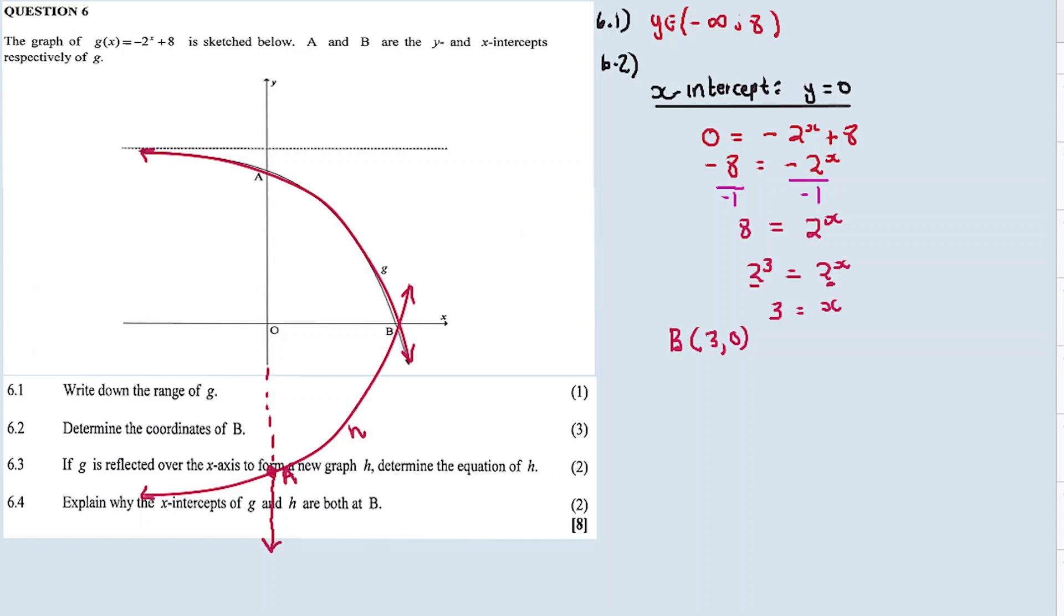The Y values of G, they were once positive, but now reflected over the X-axis, the Y values change and become negative. So, in other words, it means that with 6.3, H of X is equal to minus G of X. In other words, you multiply G of X by a negative sign. So, therefore, now when we multiply G by a negative sign, we'll put the 2 raised to exponent X over positive, and 8 over negative. So, our answer is 2 raised to exponent X minus 8.